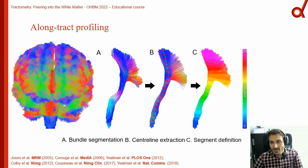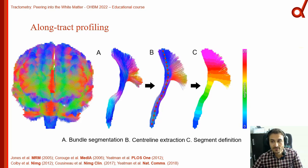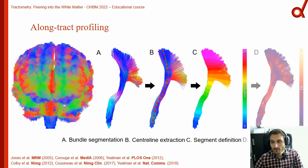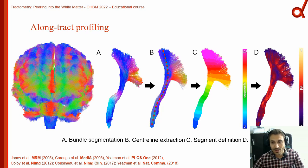We then assign each vertex from the original bundle to its closest point along the core, generating the so-called assignment maps, which are color-coded for each segment. The number of segments can be user-defined, typically varying between 20 to 100 points. Finally, we map a certain metric onto the bundle, which can then be sampled along each of these sections, generating the so-called tract profiles.